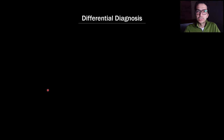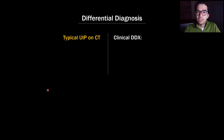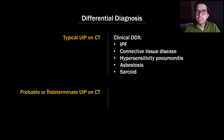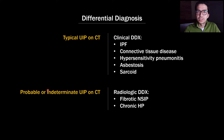When talking about differential diagnosis, there are two ways to think about it. If the patient has a typical UIP pattern on CT, we're really talking about the clinical differential — most patients will have IPF, but a good minority will have connective tissue disease, hypersensitivity pneumonitis, asbestosis, or even sarcoid. If we have a probable or indeterminate pattern on CT, the differential moves into a radiologic differential, which includes fibrotic NSIP and chronic hypersensitivity pneumonitis.